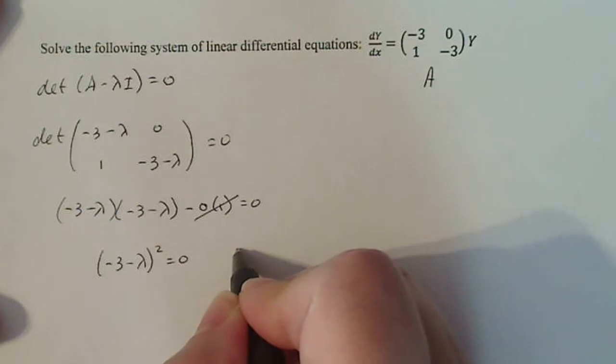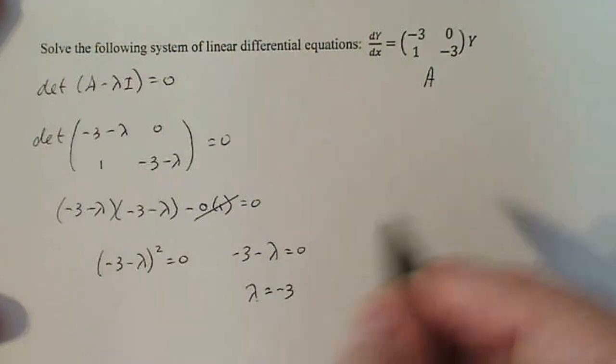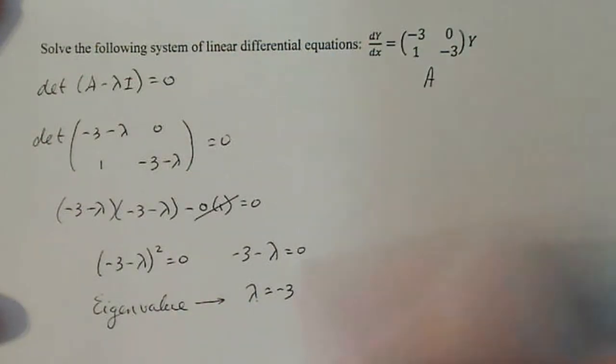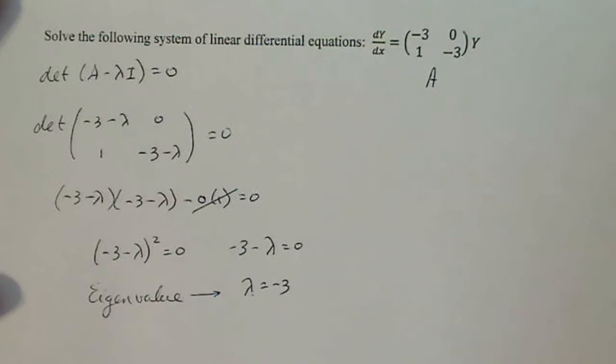So to find my eigenvalue, minus three minus lambda equals zero. Lambda equals minus three. So there is my eigenvalue. Now there's only one of them, or you can say there's two, but they're equal. So that means right now I'm only going to have one eigenvalue and one eigenvector, and that's what poses the uniqueness to this problem.